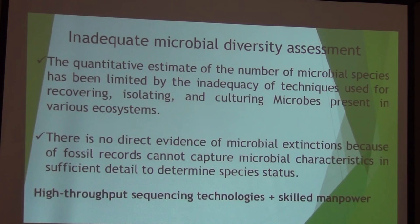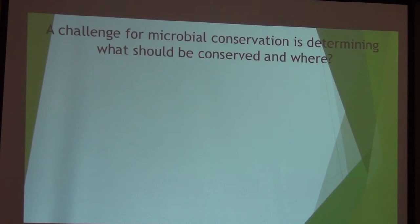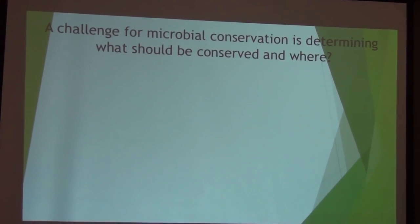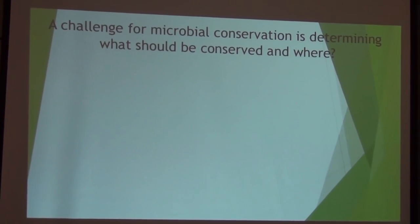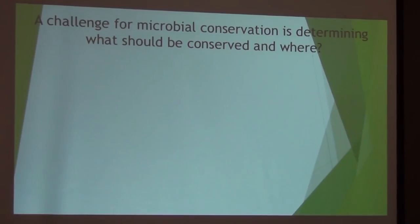We need high-throughput sequencing technologies and skilled manpower. The main challenge for microbial conservation is to determine what should be conserved and where. So setting priorities is very important. In our case, we have already set priorities — we are conserving, collecting, identifying, and conserving microorganisms, especially microbial species important for agriculture, medicine, industry, and environment. Unless otherwise, it is very difficult to conserve all everywhere, because they are everywhere. So this is one of the challenges.